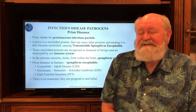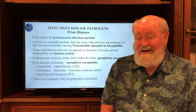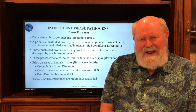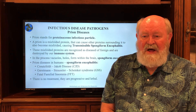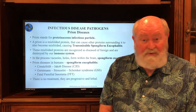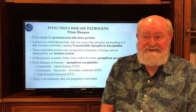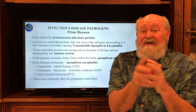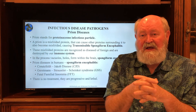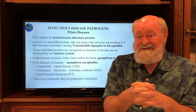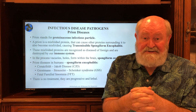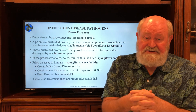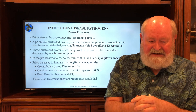Once these misfolded proteins get into your brain, they can start to cause the proteins around them to become misfolded as well. When they become misfolded, the body recognizes them as foreign and attacks them. In the process of destroying that protein, it destroys the area around it too — literally making a hole in the brain. The brain slowly turns into a sponge, which is why these are called spongiform diseases. And because it's in the brain, it's encephalitis — so all these disorders are called spongiform encephalitis.